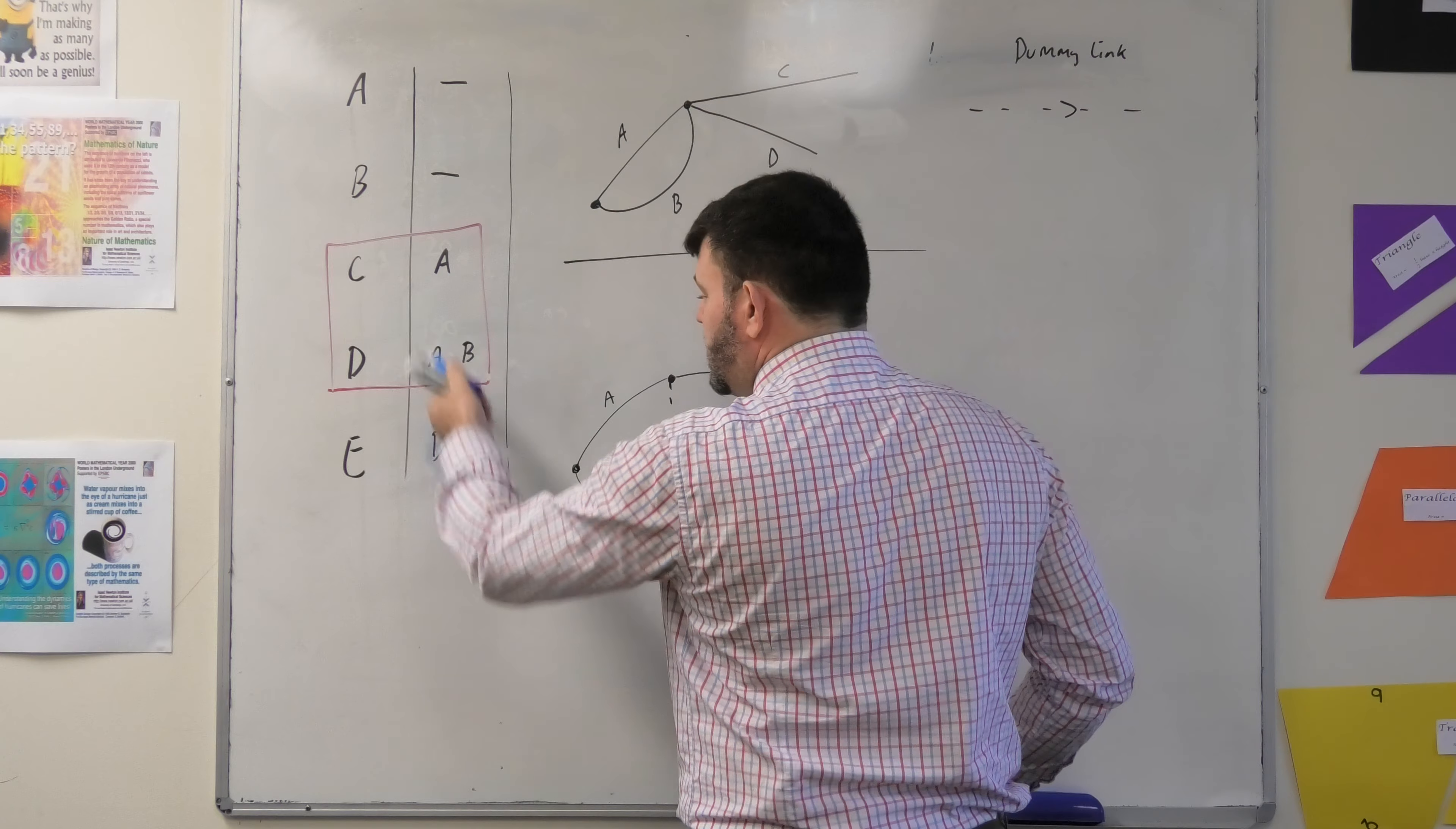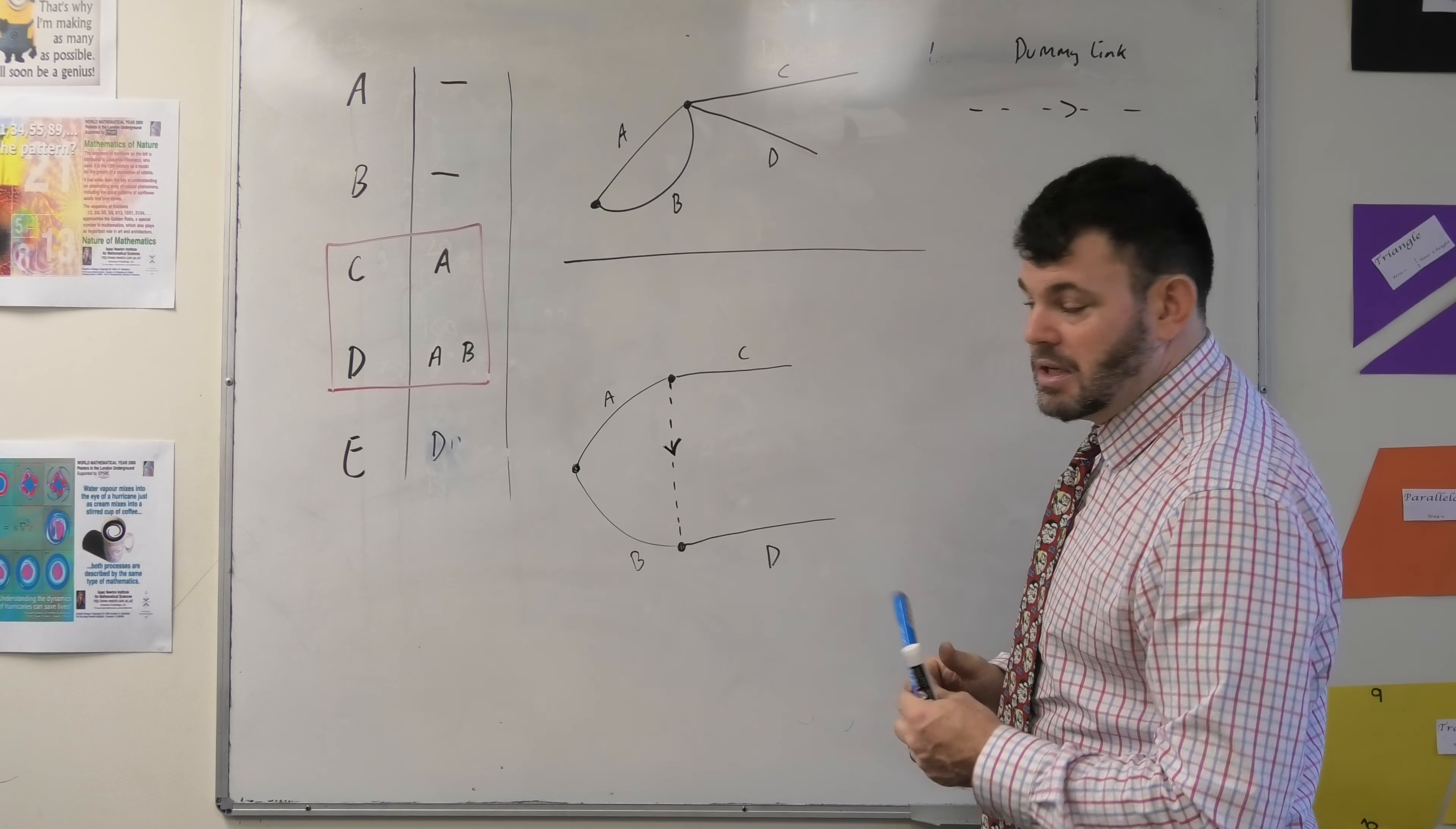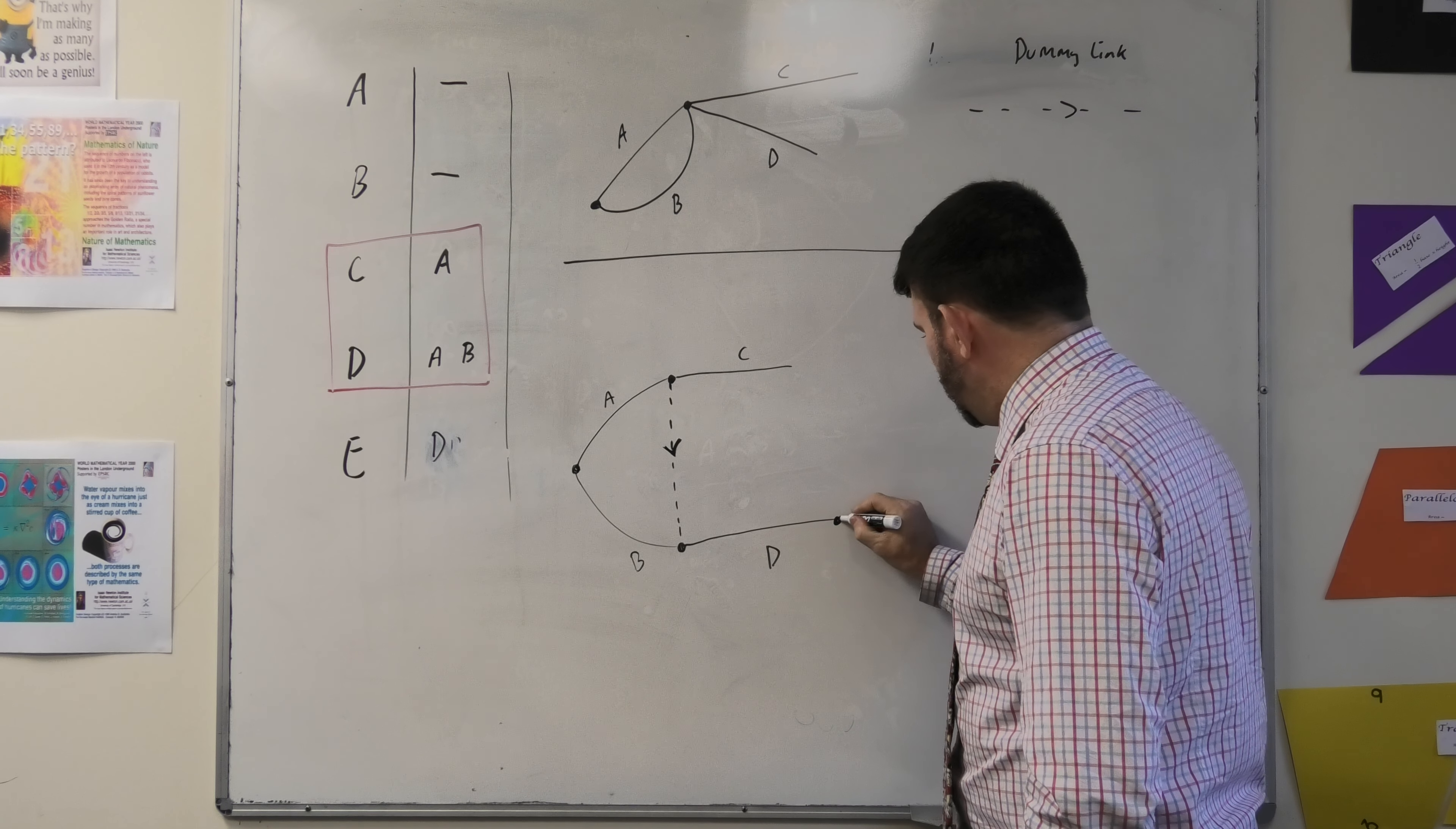Once we've done that, we then can start looking at the next part. Well, the next part's saying that E relies on D. So we can finish off D here and start our E up.